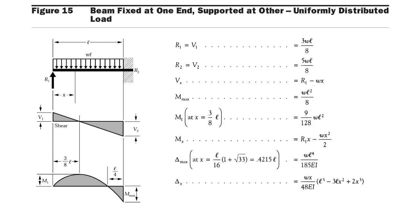Now the next condition: a beam is fixed at one end and simply supported at the other end, carrying a UDL throughout its length, as shown in figure 15. The maximum bending moment value is wl² / 8 — similar to a simply supported beam — and the maximum deflection value is wl⁴ / 185EI.